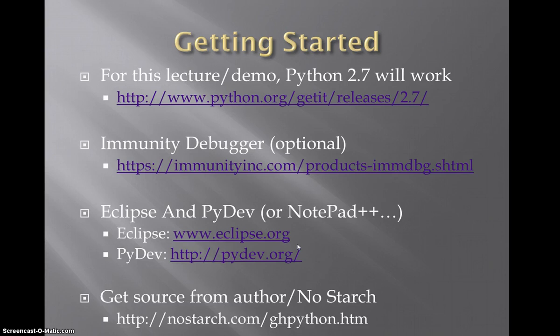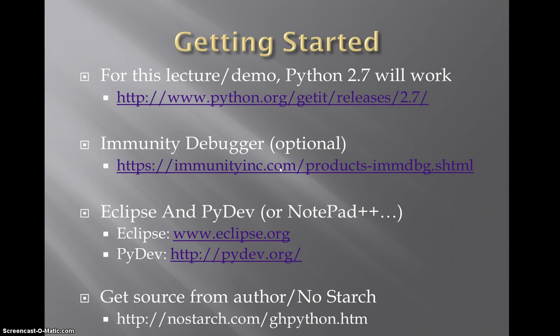To get started, the book really bases everything off of Python 2.5, but I was able to get everything we're going to cover today working with Python 2.7. You can get that at the URL shown here — it will be a Microsoft installer, so just download it, install it, and get it up and running pretty quickly. Immunity Debugger is fairly optional, but I'm going to show you a demo of the PyCommands and the structure, and there's code from the Grey Hat Python book we will use, so it might be worth grabbing.